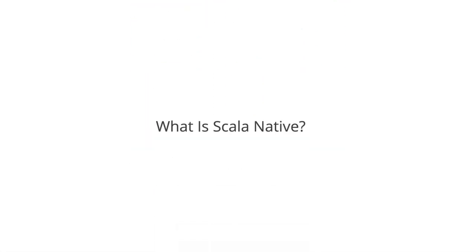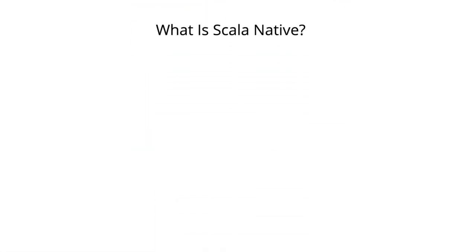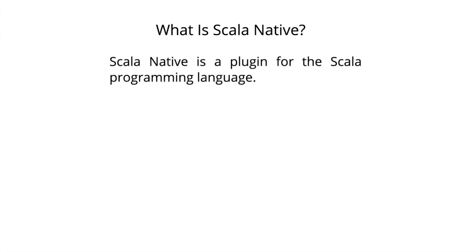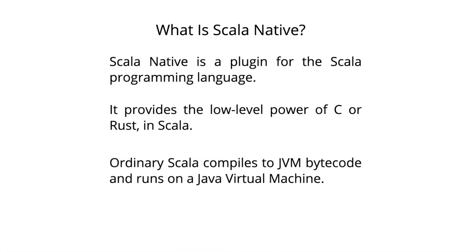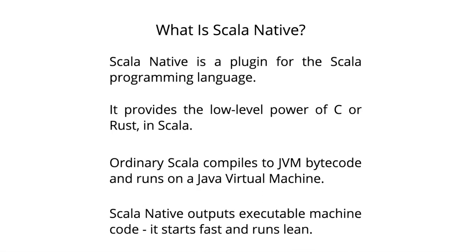So what's this book all about? First, it's about Scala Native. Scala Native is a plugin for the Scala programming language that provides the power of bare metal systems programming, like C or Rust, in Scala — a high-level language with a great modern type system. Whereas ordinary Scala compiles to Java virtual machine bytecode and runs on a JVM, Scala Native compiles your code to a compact binary machine executable file that starts up fast and runs lean.